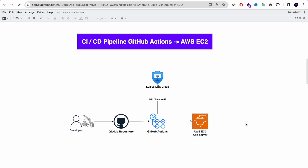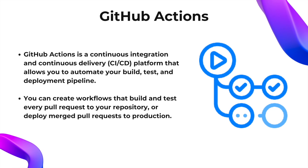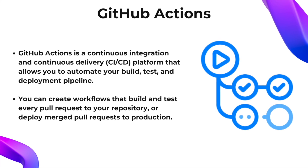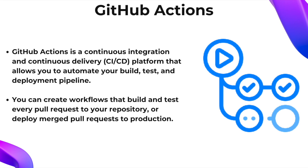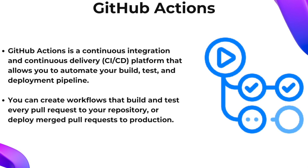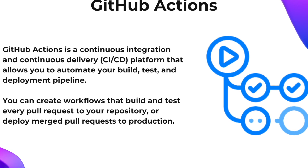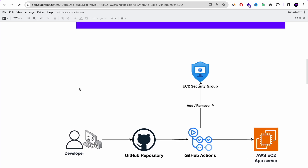What we're going to do here is push a commit to a GitHub repository, and with GitHub Actions it will trigger a deployment to an AWS EC2 instance. GitHub Actions is a continuous integration and continuous delivery CI/CD platform that allows you to automate your build, test, and deployment pipeline. You can create workflows that build and test every pull request to your repository, or deploy merged pull requests to production. It's basically a CI/CD platform that allows you to automate your deployment. And if you're asking yourself what is CI and what is CD, don't worry, I will explain it soon.